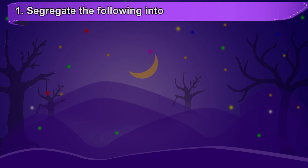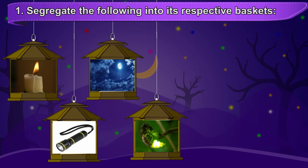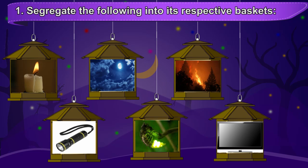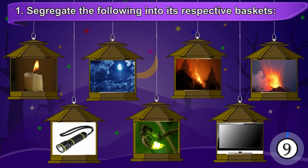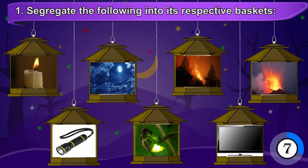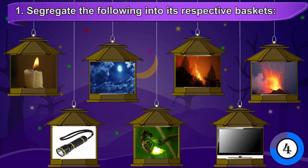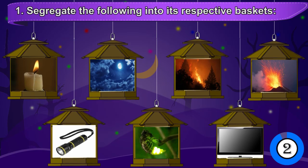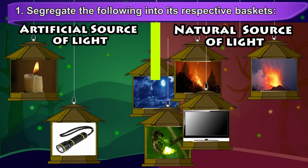Segregate the following into their respective baskets of natural and artificial sources of light: candle, torch, moonlight, glowing worm, forest fire caused by lightning, a TV monitor, and an erupting volcano. This is what each basket contains.